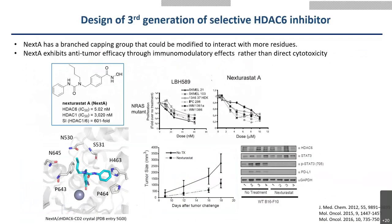Based on this idea, we selected a compound called Nexturastat-A as our parent compound, because this compound has a branched capping group. In the cocrystal, we know that the two capping groups actually reach out to two pockets, but there is no direct interaction with residues. So there is the possibility that if we add more polar groups, it should establish some additional interactions with the residues. Compared to the first generation HDAC6 inhibitors, this inhibitor can only exhibit a very weak antiproliferative effect, yet it shows significant antitumor activity in vivo.